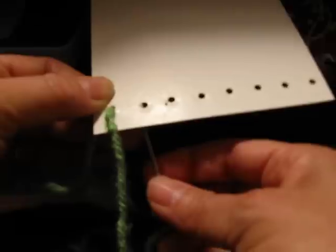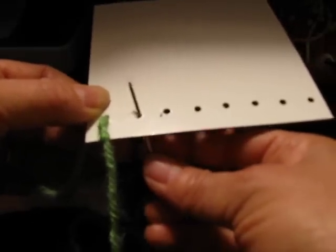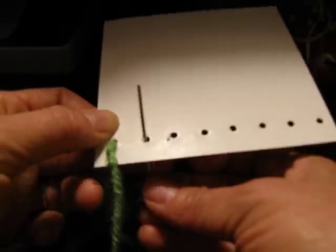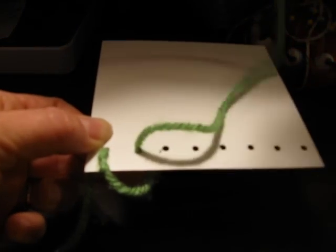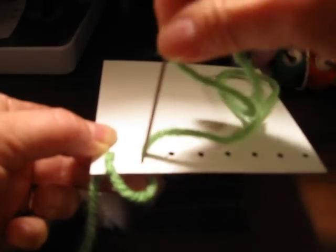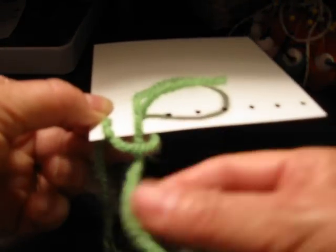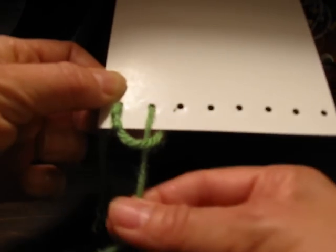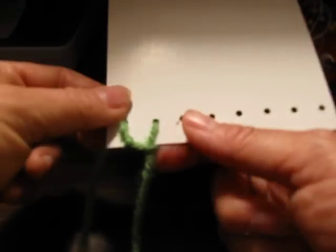You will always be bringing your needle from the bottom to the top. And this time, go under the yarn. And you have made the first two blanket stitches.